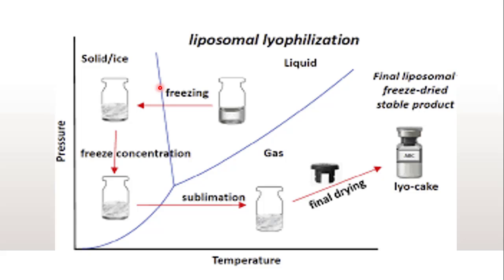We will see this with the help of a figure. In lyophilization, this is a temperature-dependent dehydration process. At low temperature, dehydration — which means removing water with the aid of heat — is carried out. First, freezing is done, and when the pressure is lowered, sublimation occurs. Sublimation is converting a solid substance to gas without converting it to liquid. This process is also known as freeze drying or cryodesiccation.